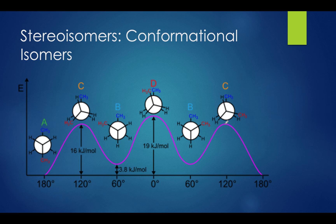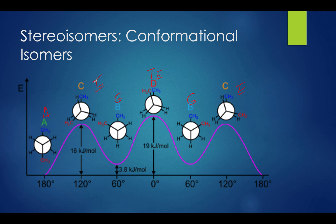Here's a chart that helps you visualize this easily. The highest energy potential of all the conformations is totally eclipsed, labeled TE. The lowest is anti, labeled A. The intermediate ones are eclipsed and gauche — the 60 degree distance is gauche, and the 120 degree distance is eclipsed. Screenshot this chart and study it. It's a great tool for understanding Newman projections for testing.